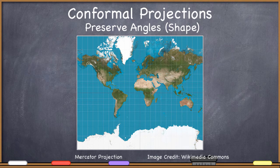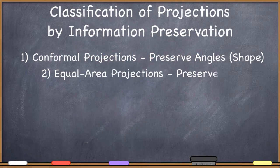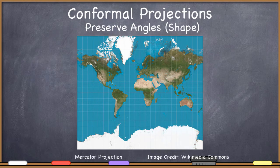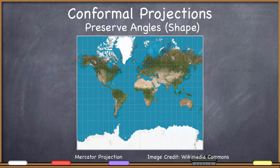We also have equal area projections, which preserve area. Looking back at the Mercator projection, we can see it is highly distorted in another way — although the shapes look right, the area is highly distorted. Take a look at the differences between Greenland and South America. You would think, according to this map, that Greenland is a whole other continent because it appears so much larger than South America. Of course that's absolutely not true. Greenland is much smaller than South America, and Antarctica is not nearly as gigantic as it appears here. So we have shape right, but we do not have area right.